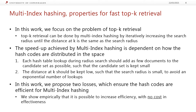We have talked about how to speed up retrieval using multi-index hashing, but the actual speedup achievable depends on how the codes are distributed in the Hamming space. Each hash table lookup during radius search should add as few documents to the candidate set as possible, because we have to do a full distance computation against all codes in the candidate set and sort them. We also wish to keep the distance at k low, as this ensures a smaller search radius and fewer non-exact lookups — especially avoiding the exponential lookups that occur at higher search radii. In this work, we propose two losses which ensure hash codes are efficient for multi-index hashing.